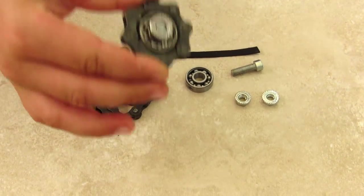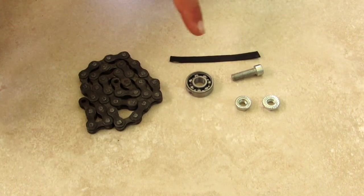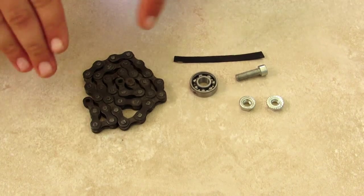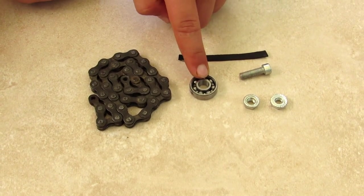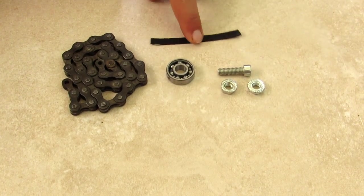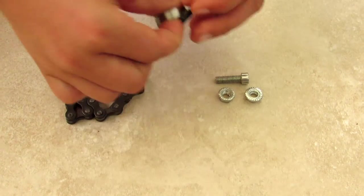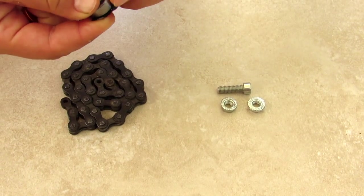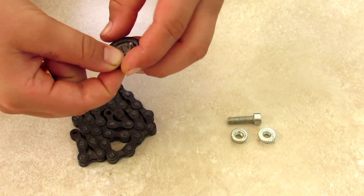Here are the materials to make this fidget spinner. You're gonna need some bicycle chain, doesn't matter old or not. We're gonna show you later in the video how to make it shinier. You're gonna need your 608 skate bearing, a bolt and two nuts that can screw onto it, and also a small strip of rubber that perfectly fits around your bearing.